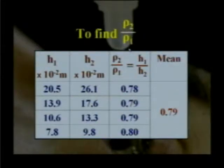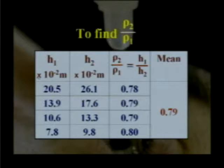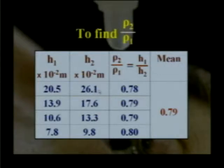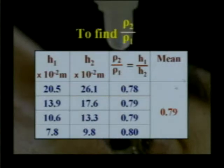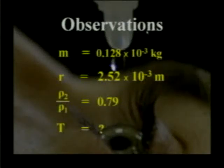You can find the value of ρ2/ρ1 by measuring h1 and h2, the water column and the liquid column. For example, h1 = 20.5 cm, h2 = 26.1 cm, and ρ2/ρ1 = h1/h2 = 0.78. By adjusting the heights of the liquids in the two limbs you repeat the experiment, and the average value of ρ2/ρ1 = 0.79.